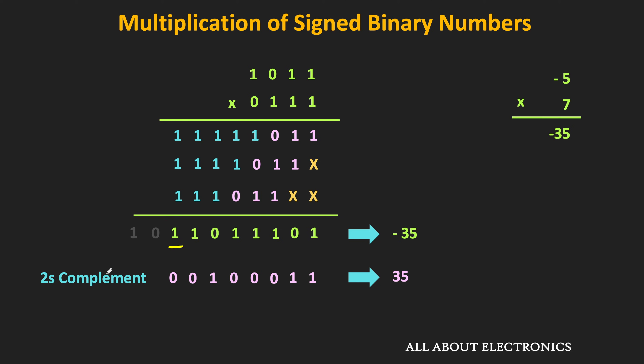In this multiplication, the multiplicand was negative while the multiplier was positive. But if the multiplier is also negative, then using this method directly won't give the correct result. A small modification is needed in the last partial product. Let us take one more example to understand this.